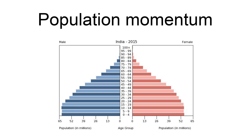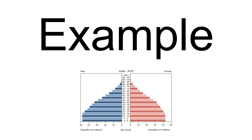Population momentum usually occurs in populations that are growing. Assume that a population has three generations: first (oldest), second (childbearing), and third (children). Further assume that this population has a fertility rate equal to 4 — that is, each generation is twice the size of the previous.